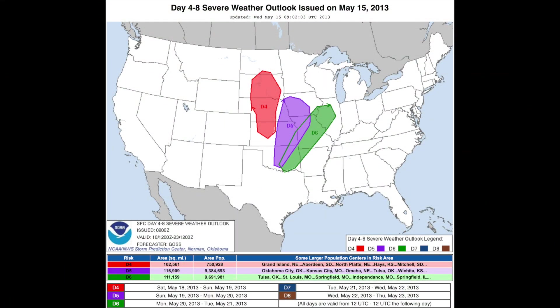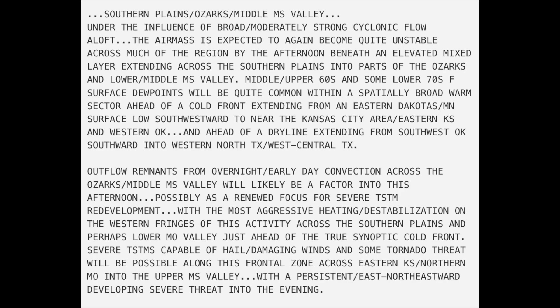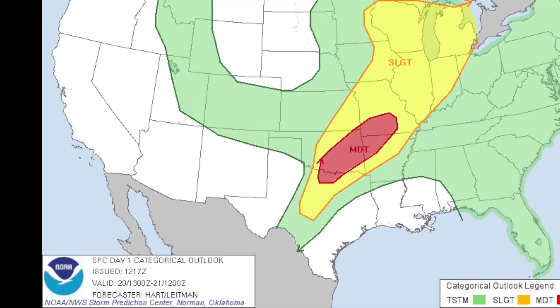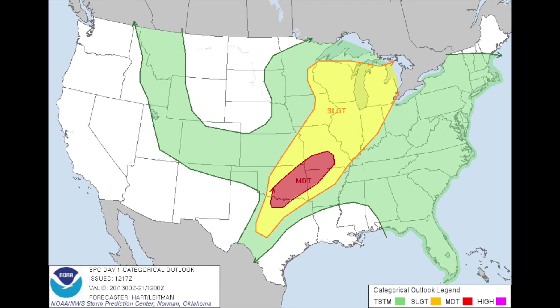The National Weather Service office in Norman, Oklahoma had warned as early as May 15th that there would be a possibility of severe weather on May 20th. The most intense severe weather activity was expected to come across the southern Great Plains, specifically central Oklahoma, during the afternoon hours that Monday. As such, the Storm Prediction Center issued a moderate risk of severe thunderstorms during the early morning hours of May 20th, from southeastern Missouri to north-central Texas.